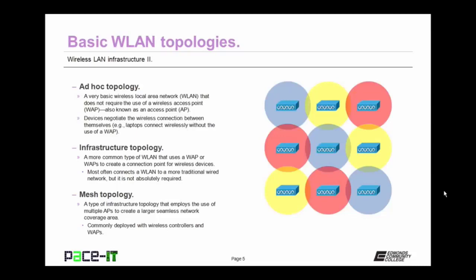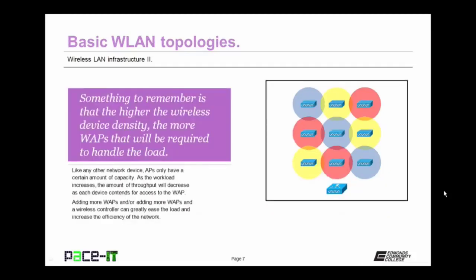Then there's the mesh topology. This is a type of infrastructure topology that employs the use of multiple access points to create larger seamless network coverage areas. They're commonly deployed with wireless controllers and wireless access points. The higher the wireless device density, the more wireless access points that will be required to handle the load.